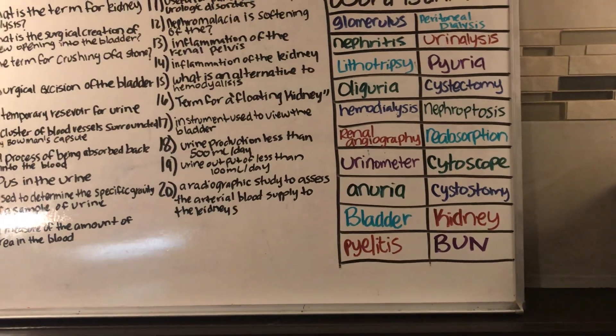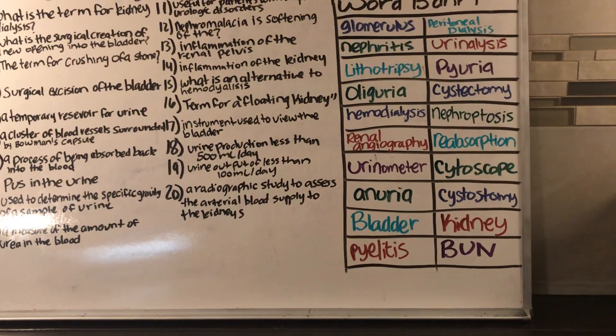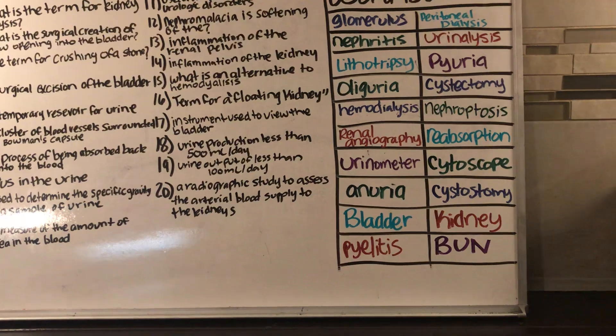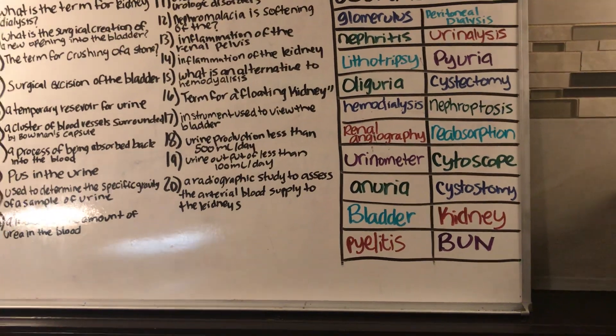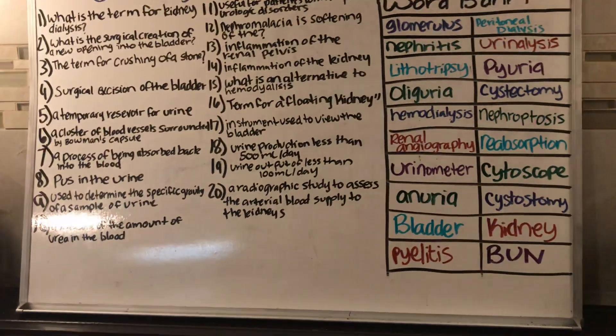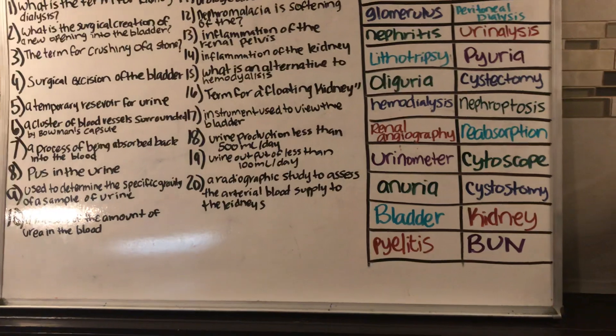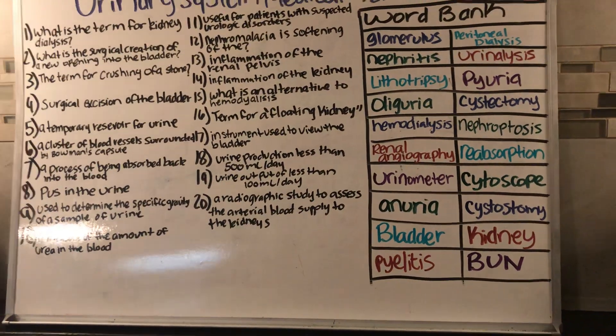Number nineteen: urine output of less than 100 milliliters a day is considered what? Anuria.